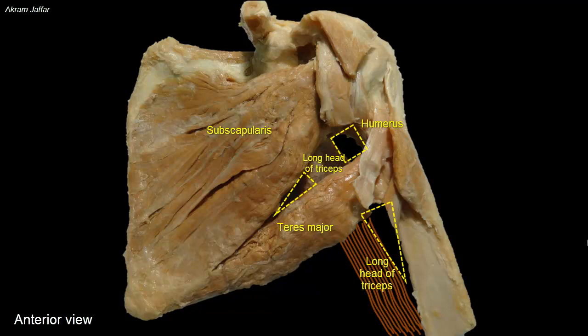The triangular space medial to the quadrangular space is bounded by teres major, teres minor, and the long head of triceps. Teres minor is not shown here because it has been covered by subscapularis muscle, but it will be very clear when we look at it from behind.